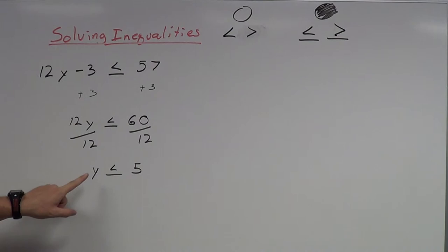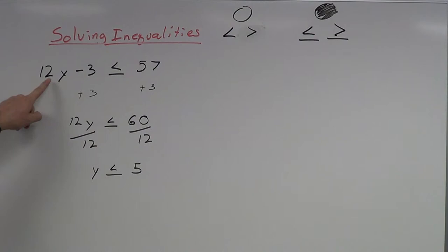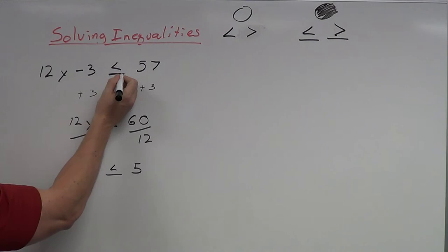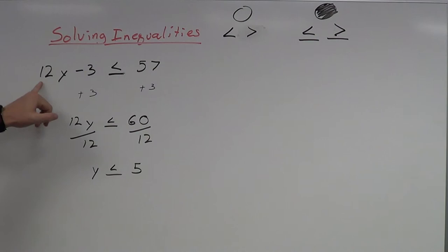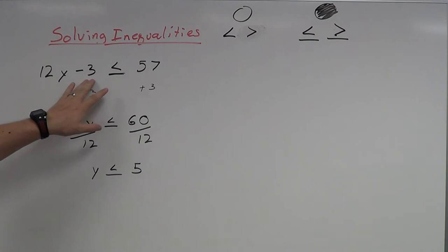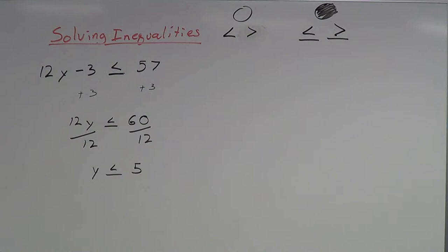Let's test this. If I take 5 and plug it in: 12 times 5 is 60, 60 minus 3 is 57. 57 is less than or equal to 57 — that actually works because of the 'or equal to' part. And if I put in 4: 12 times 4 is 48, 48 minus 3 is 45. 45 is less than 57, so that does work too.